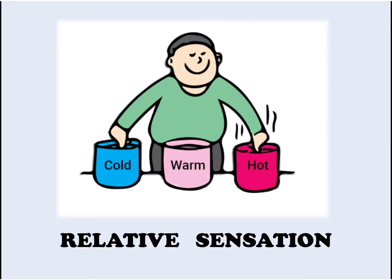Next, let us look at what we mean by relative sensation. In winter you may be feeling very cold and need a sweater, but your friend is not feeling cold at all. On the other hand in summer, you may be feeling very hot and sweaty while your friend feels comfortable. This happens due to something called the relative sensation of heat. We cannot determine the exact temperature of an object accurately simply by touching it, so we need specific instruments to measure temperature accurately.